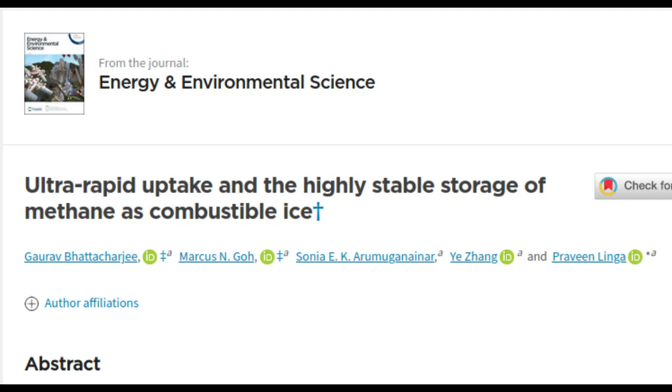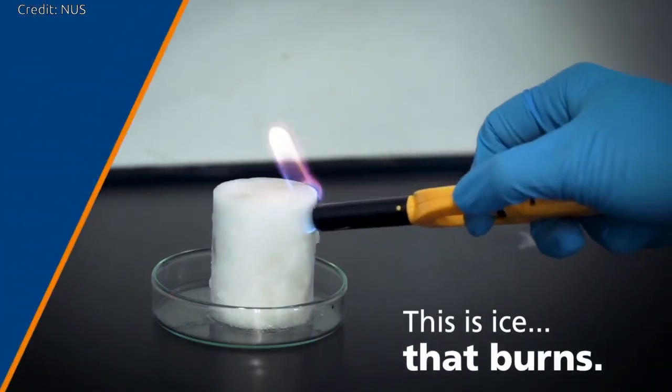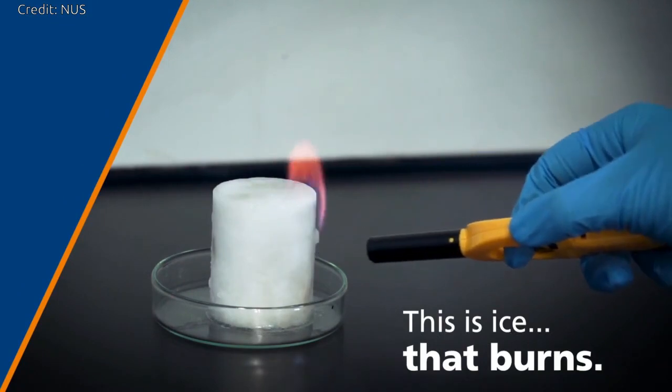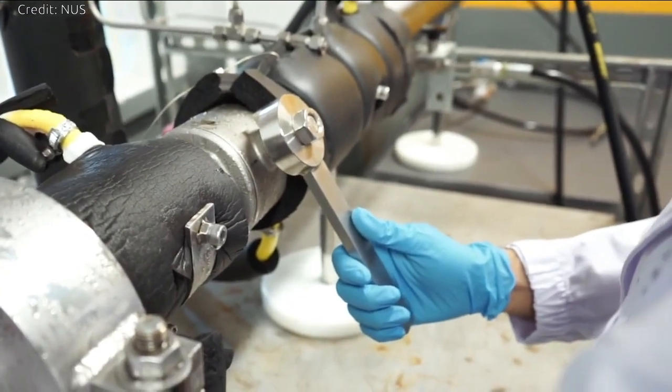The NUS team worked on a process of converting natural gas into a solid form known as gas hydrates, or combustible ice, which consist of molecules of natural gas trapped in cages formed by water molecules. In fact, nature stores natural gas this way, but the process is extremely slow.